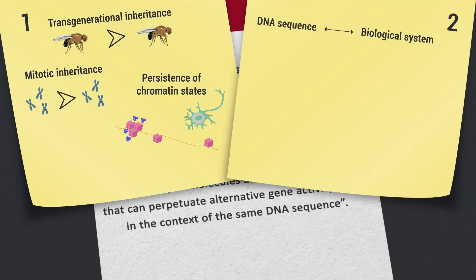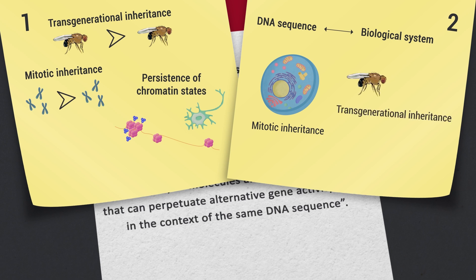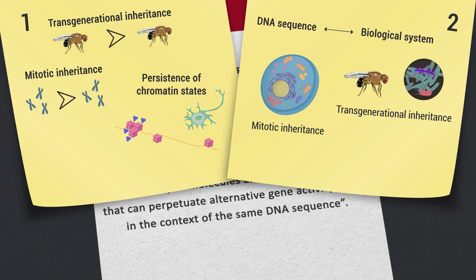Secondly, the DNA sequence to be considered depends on the biological system. In mitotic inheritance, one should analyze the genomic sequence of individual cells, whereas in transgenerational inheritance, one should analyze the DNA of the whole organism as well as of its microbiota if it can contribute to inheritance.